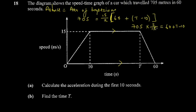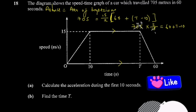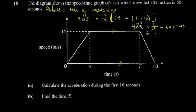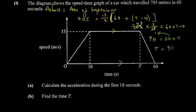Since 15 is a factor, 705/15 = 47. Then 47 × 2 = 94. So 94 = 60 + t − 10. Simplifying the right side: 60 − 10 = 50, so 94 = 50 + t. Transposing: t = 94 − 50 = 44.